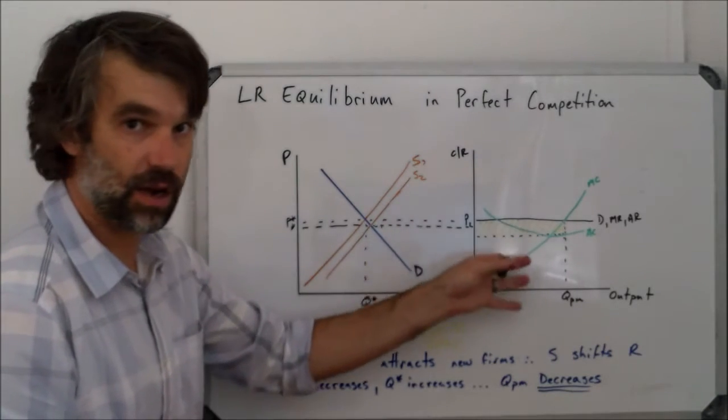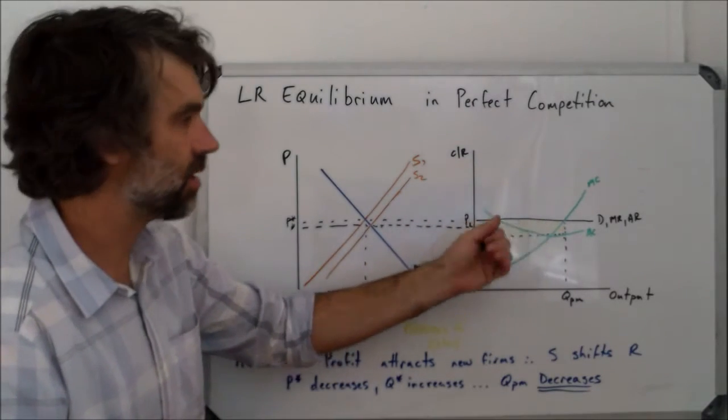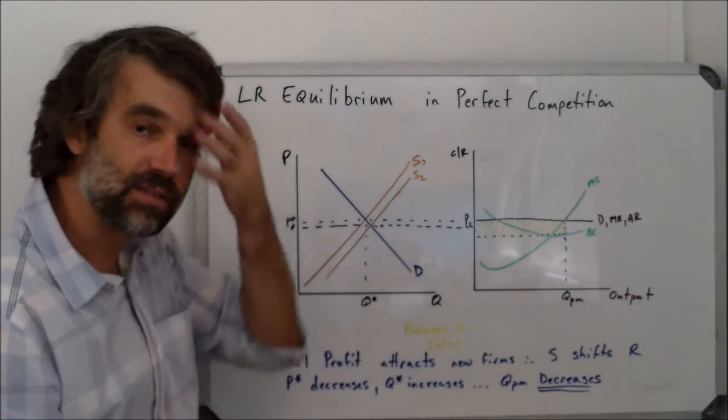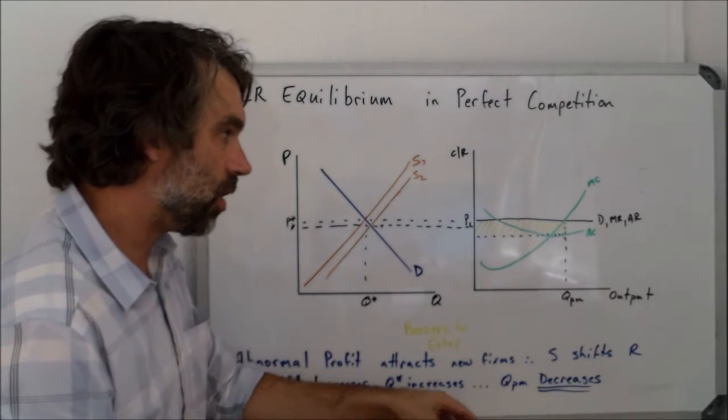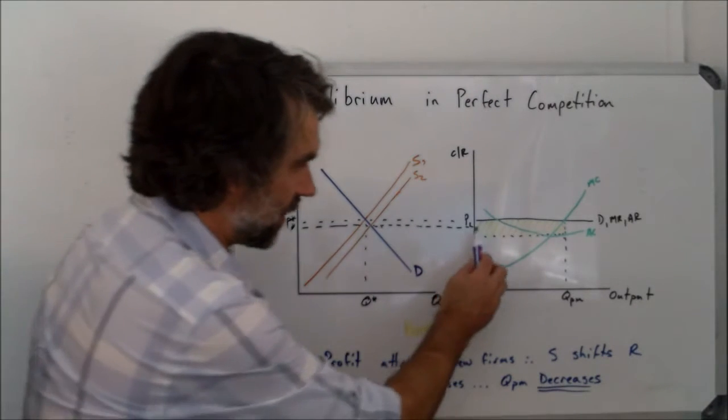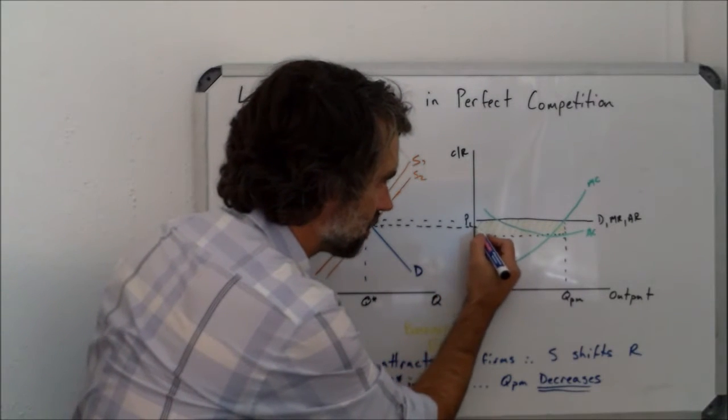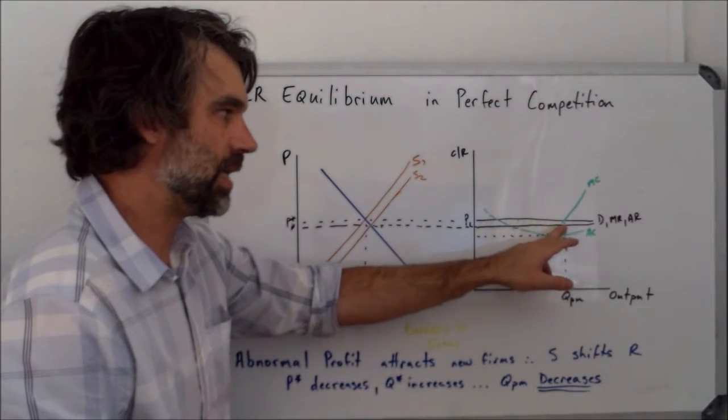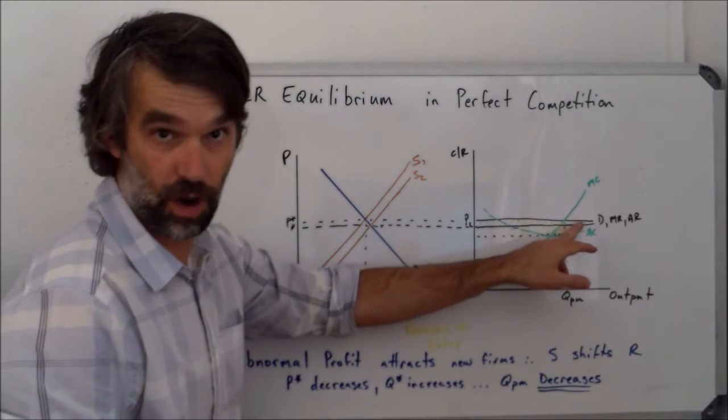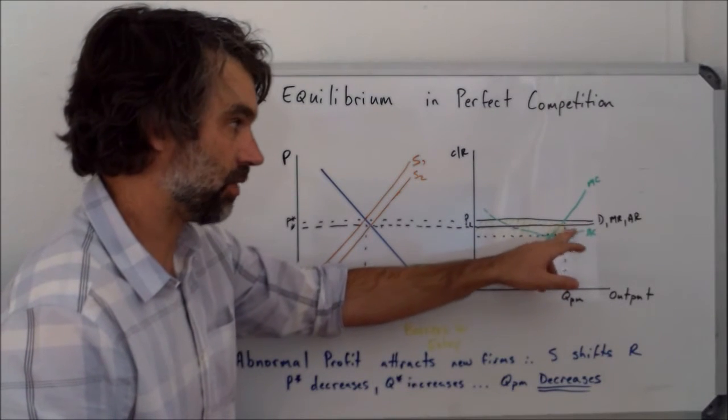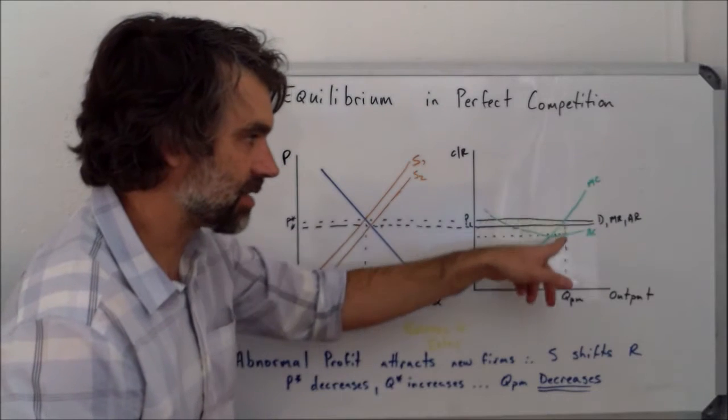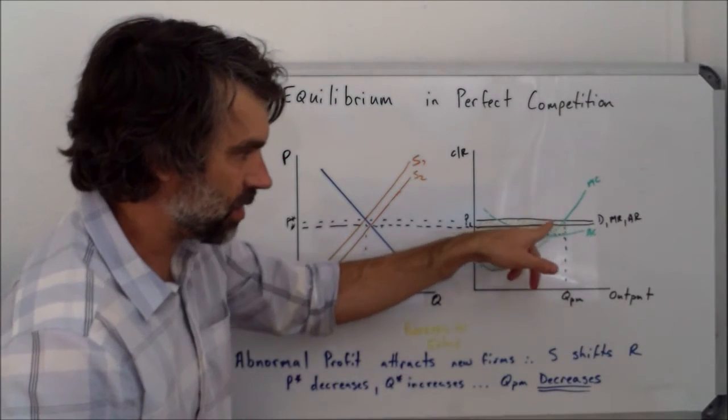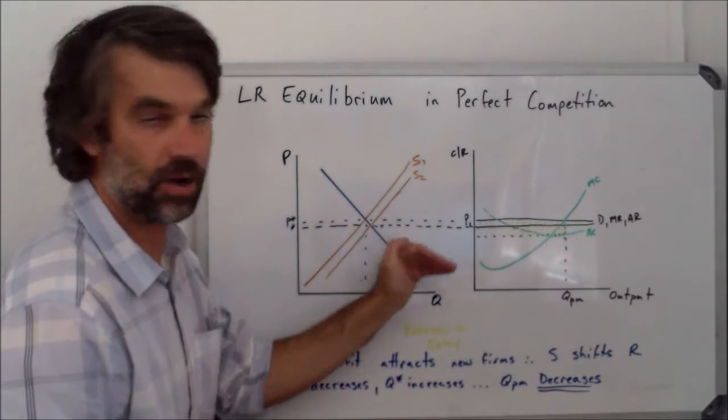Which means, because these guys are price takers, well, what that means is that they're going to have to take the new price that the industry sets. So what we'll see is that because they're taking this new price, then this is going to be their new marginal revenue and average revenue curve. Which means that MC now intersects MR, the new line, the new MR, at a point that's further to the left and below the original one.